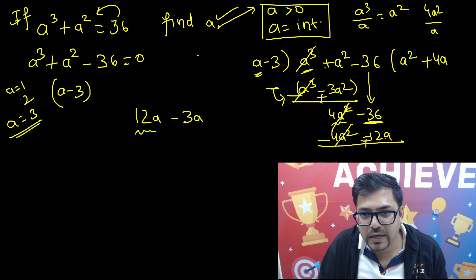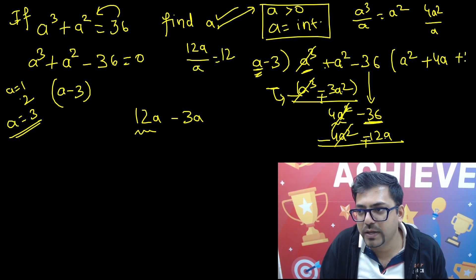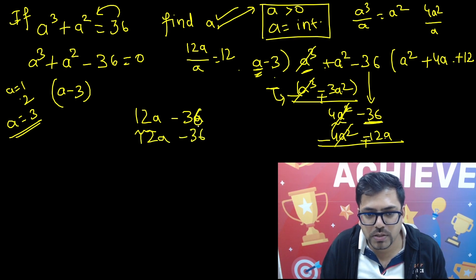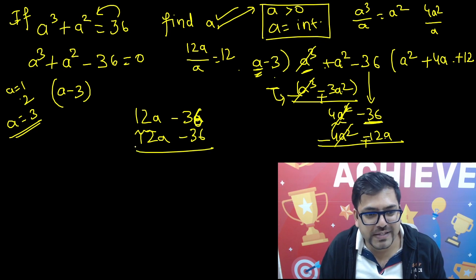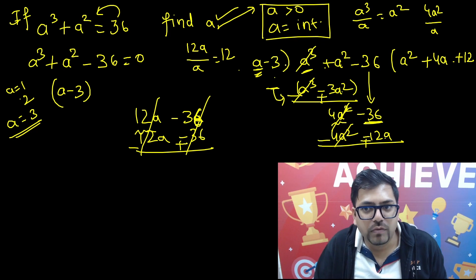So you have got plus 12a and then you have got minus 36. Again you have to take the first term, 12a, and divide it with a, so you get 12. Now this 12 will be written here. Then 12 into a is 12a, and then 12 into minus 3 is minus 36.